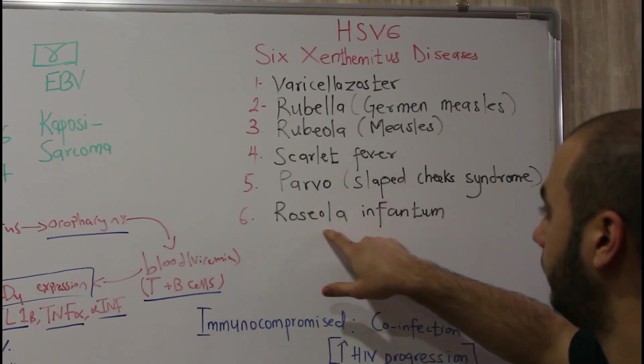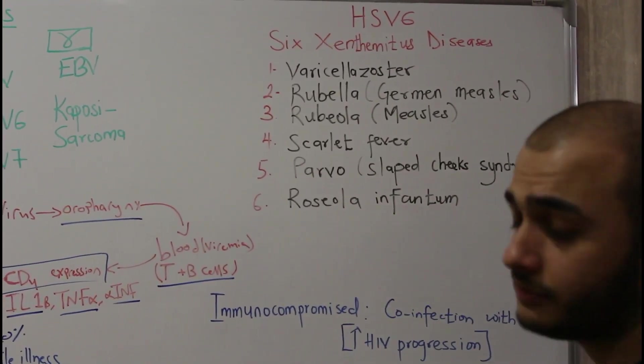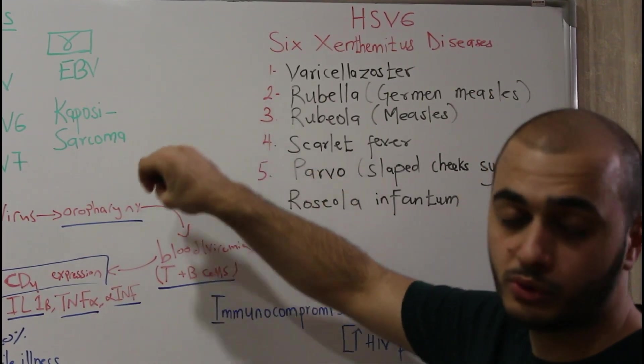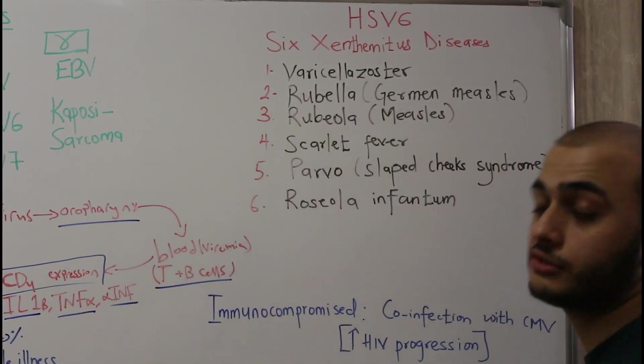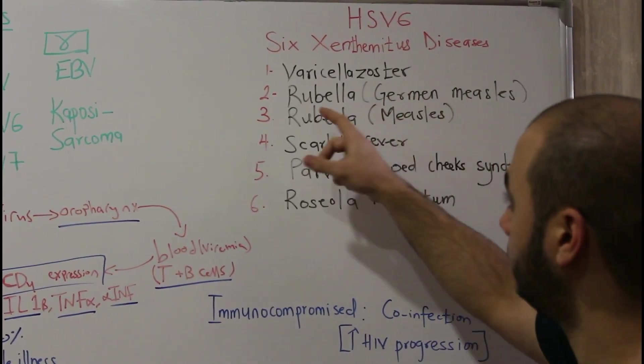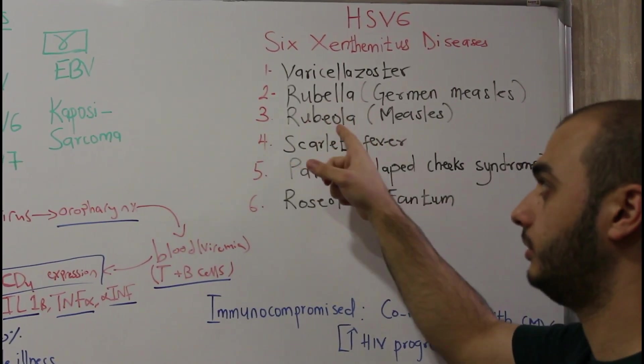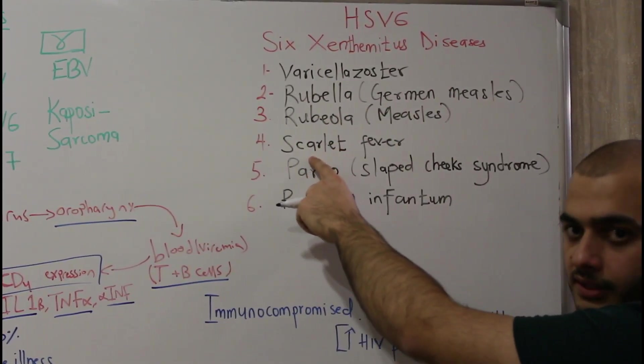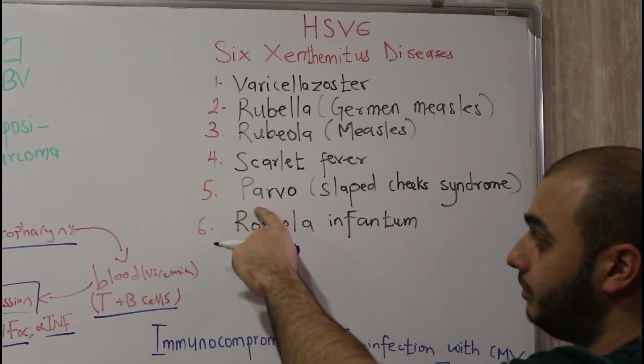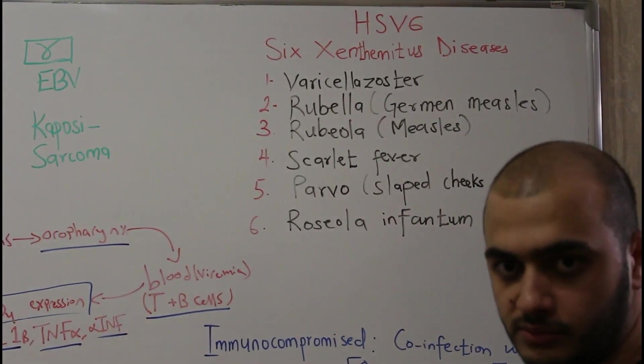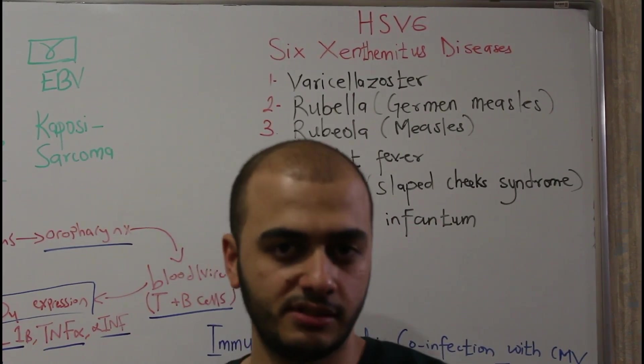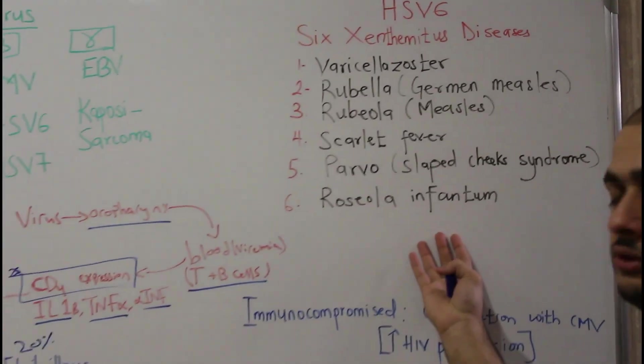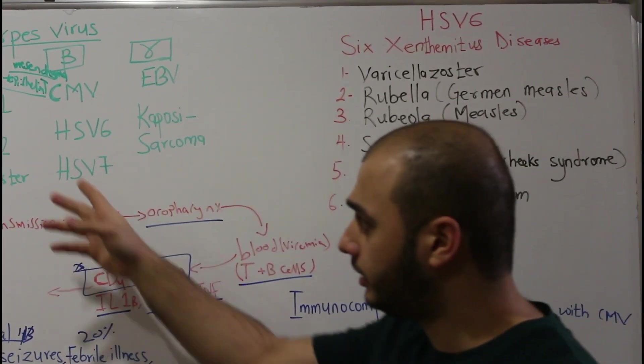We have six exanthematous diseases classified by common order for pediatricians. First is varicella zoster (chickenpox), second is rubella, third is rubeola (measles, also called German measles), fourth is scarlet fever, fifth is parvovirus (also called slap cheek syndrome—the child looks like they have a slapped face), and the sixth one is our virus, roseola infantum or roseola subitum.